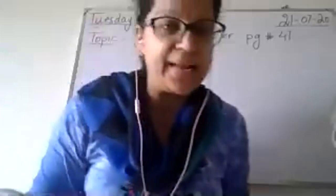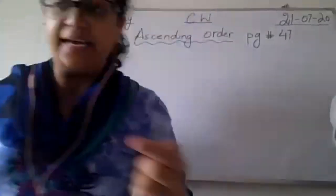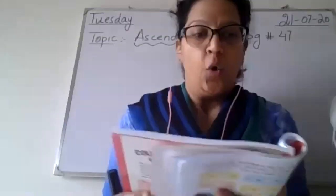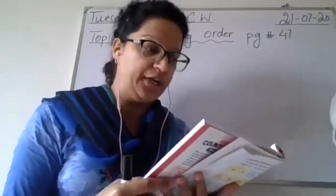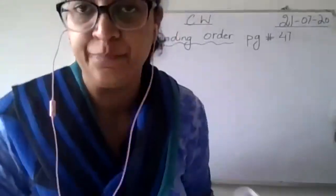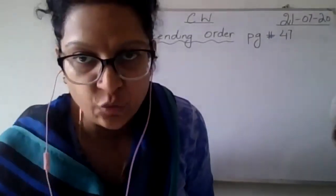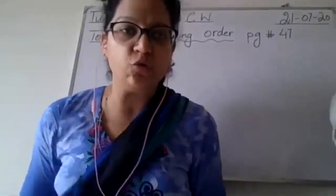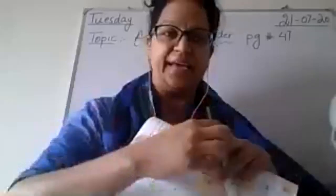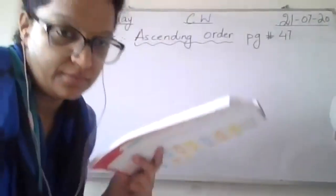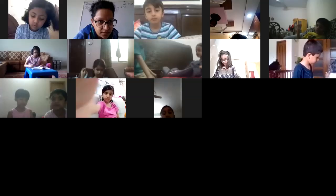Now all of you get ready with your pencils and textbooks — countdown books. The topic is ordering numbers up to 100. Question number one: write the numbers of each group in ascending order; one has been done for you. All of you who have joined right now, please take out your countdown books and math copies because I have to do the work and you have to write in the copies and the books.